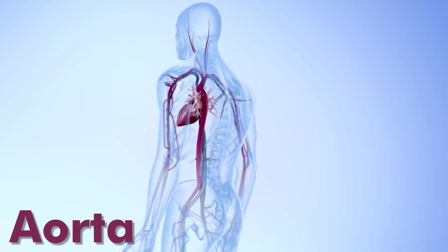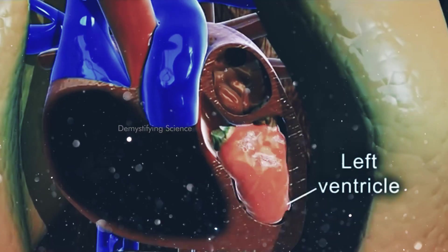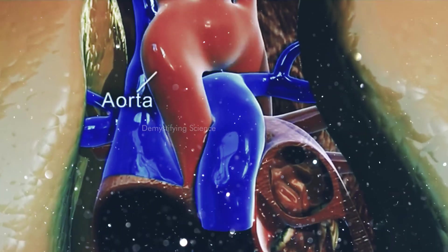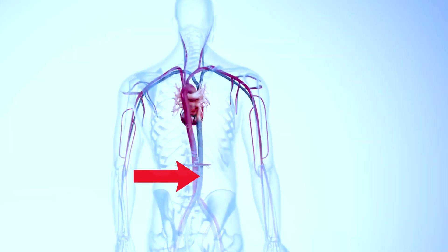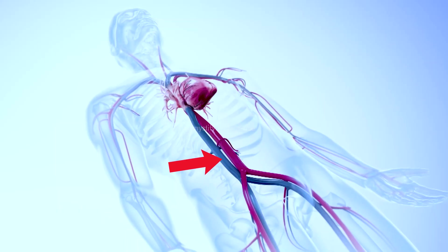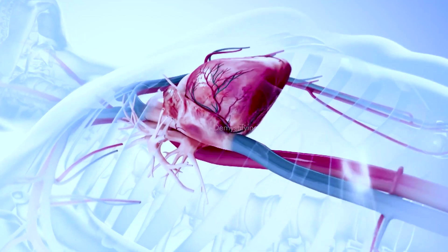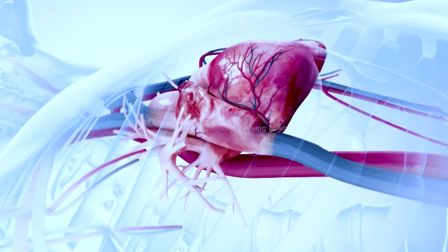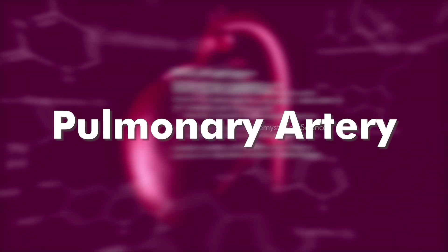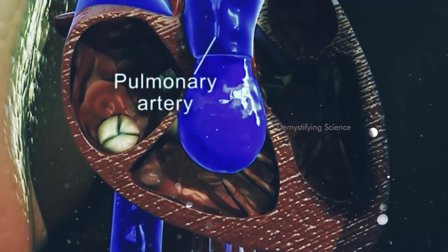Number 1: Aorta. The aorta is the largest artery in the body. It carries oxygenated blood away from the left ventricle to the body. Number 2: Vena cava. The vena cava is the largest vein in the body. It carries deoxygenated blood from the body back to the heart.